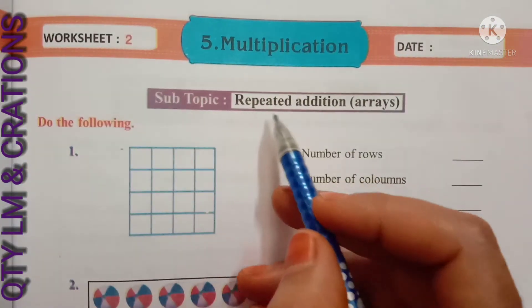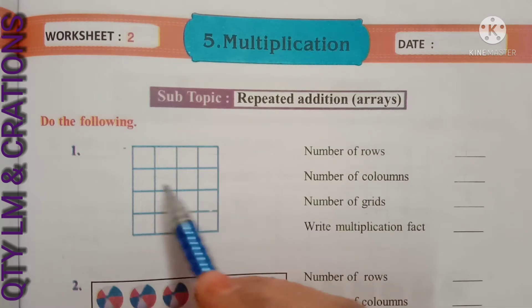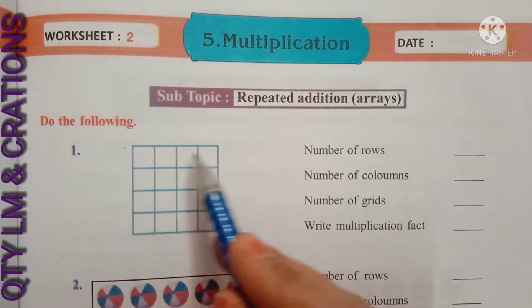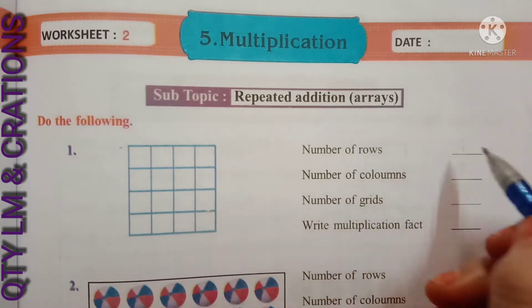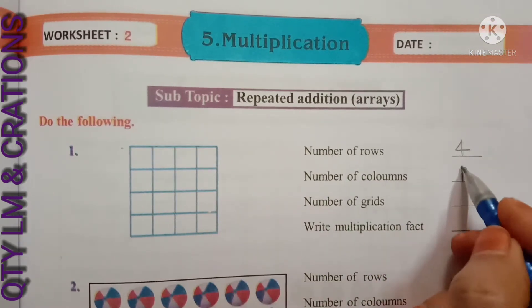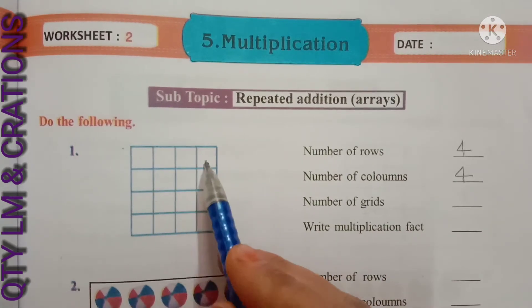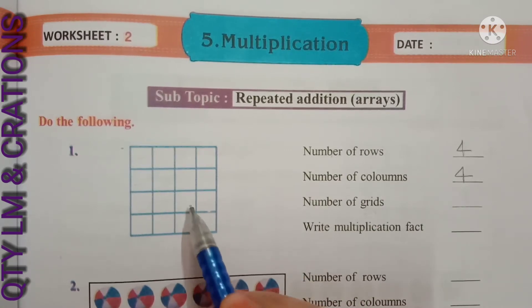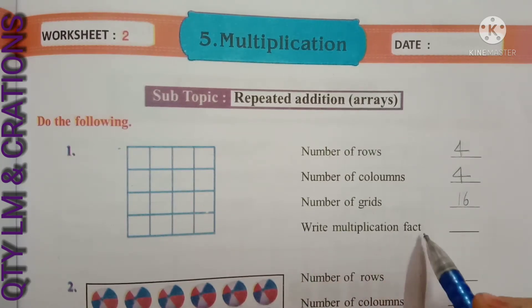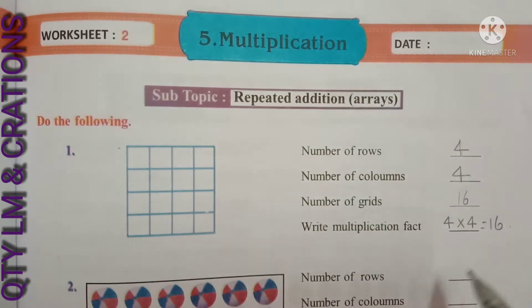Next, worksheet number two, subtopic: repeated addition. Do the following. First question: this is a box with grids. Number of rows — how many rows are there? One, two, three, four — four rows. Number of columns — one, two, three, four — four columns. Number of grids — counting all grids gives sixteen. Multiplication fact: four rows into four columns equals sixteen grids.